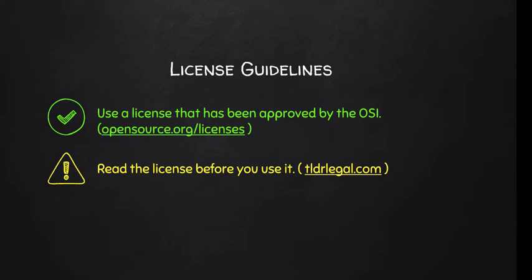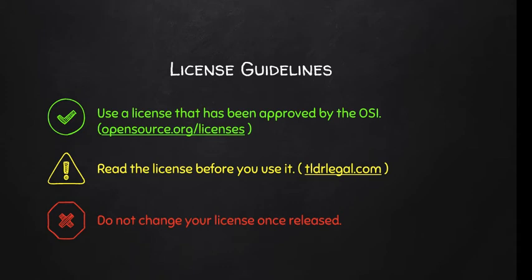And then finally, once you pick a license and release your code or software, do not change the license. This is to protect you, but also to protect the people using your code. As soon as you release it, you have to assume a derivative has been created. If you were to change your license, you enter all sorts of legal limbo about when someone copied your code and now you've just changed the license. You can create new releases with new licenses, but once you release code, you do not change the license. Choose wisely.